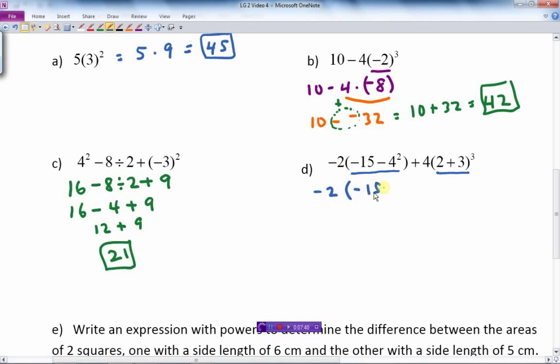Negative 2 times, inside the bracket is negative 15 minus 16, plus, let me leave this whole thing so you can see what we're doing step by step here.